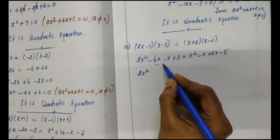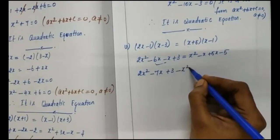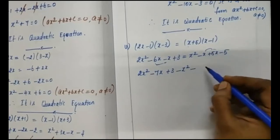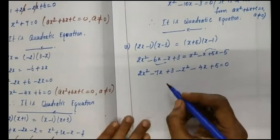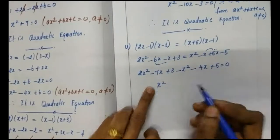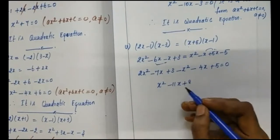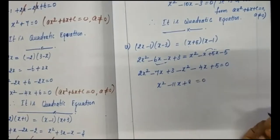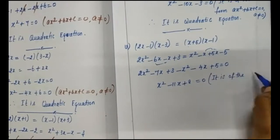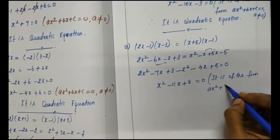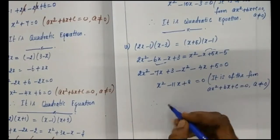Bringing all terms to one side: 2x squared minus x squared minus 7x minus 4x plus 3 plus 5 equals 0. So x squared minus 11x plus 8 equals 0. This is in the quadratic equation format — of the form ax squared plus bx plus c equals 0 where a is not equal to 0. Therefore, it is a quadratic equation.